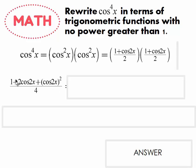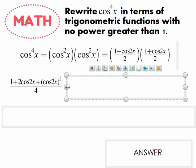From here we see that the terms one and two cosine 2x have no powers greater than one — fantastic. But we still have cosine squared 2x, which has a power greater than one, so we're going to take that piece and apply the power reducing identity again.